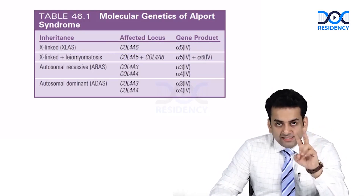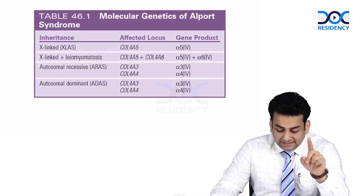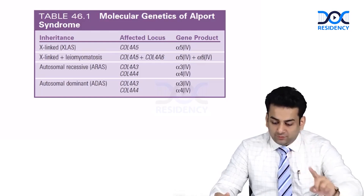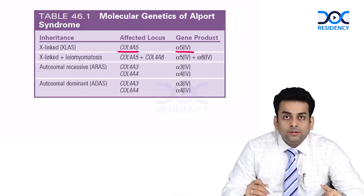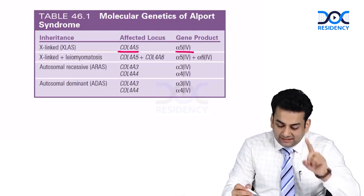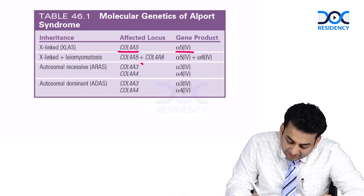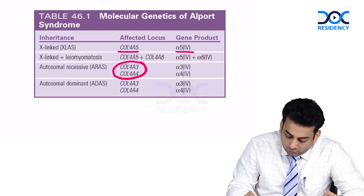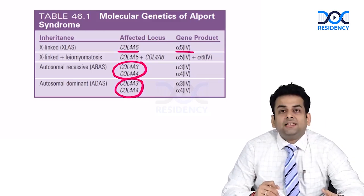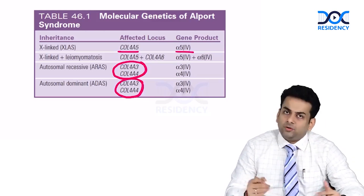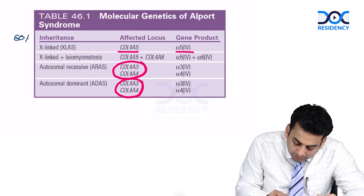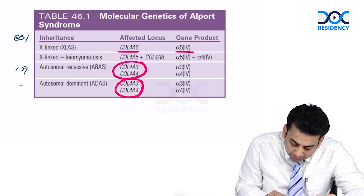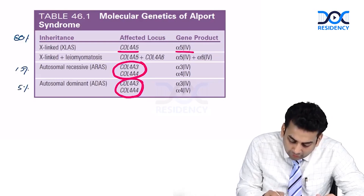For X-linked Alport syndrome, it is the alpha 5 chain of collagen IV that is primarily mutated. In autosomal recessive, it is the alpha 3 and alpha 4 chains, and in autosomal dominant, it is also the alpha 3 and alpha 4 chains. X-linked accounts for about 80 percent of cases, autosomal recessive about 15 percent, and autosomal dominant about 5 percent.